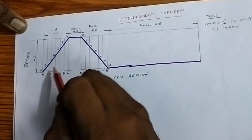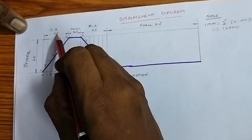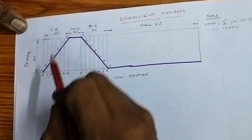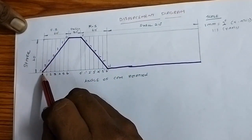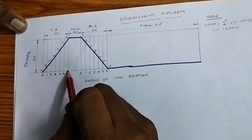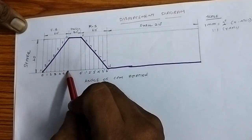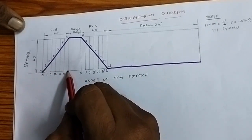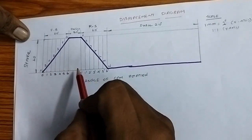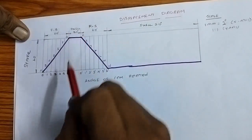First, the forward stroke angle is 60 degrees. At the scale of 1 mm equals 2 degrees, 60 degrees corresponds to 30 mm length. Mark that point. Next, the dwell period is for 30 degrees, which corresponds to 15 mm length.